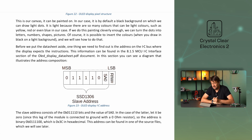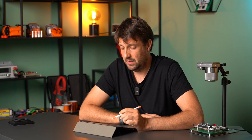Of course, it's possible to invert the colors when you draw in black on a light background, and we will see how to do that. Before we put the datasheet aside, one thing we need to find out is the address on the I2C bus where the display expects the instructions. The slave address consists of the bits 011110 and the value of SA0. In our case, SA0 will be 0, since this leg of the module is connected to ground with a 0 ohm resistor, so the address is binary 0111100, which is 3C in hexadecimal. This address can be found in one of the source files. I think we have enough information for now.